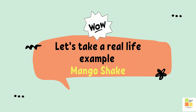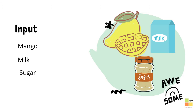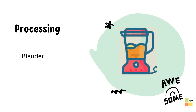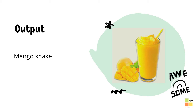Let's take a real-life example: mango shake. The inputs are mango, milk, and sugar. The processing device is the blender. The output is mango shake.